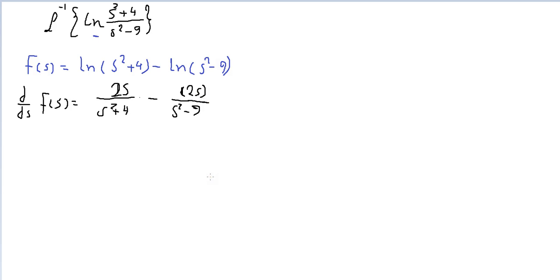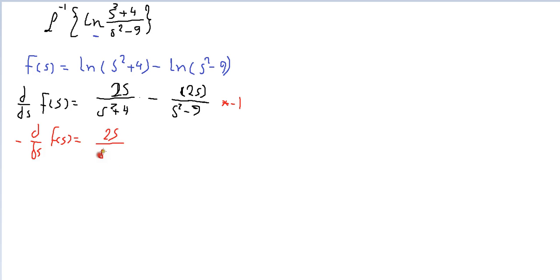We know a rule that if we multiply both sides by minus 1, we get minus d/ds of F(s), which refers to t·f(t) in the time domain. So we have: minus d/ds {F(s)} equals 2s/(s² - 9) minus 2s/(s² + 4).